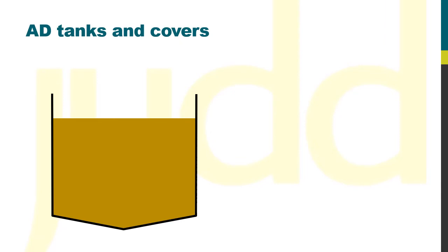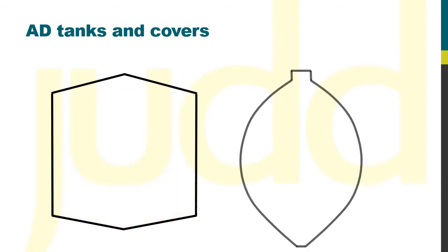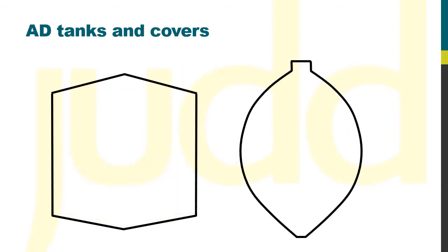The cylindrical tank can be fitted with either a fixed cover, which provides headspace for the biogas above the liquid surface, or a floating cover, which allows the gas volume to change without allowing air into the reactor, which would create an explosion hazard. As well as the cylindrical reactor, there's also the egg-shaped reactor. There are a few variations on the shape, none of them exactly egg-shaped, but they at least resemble an egg more than they do a cylinder.